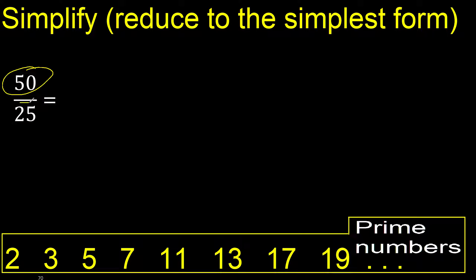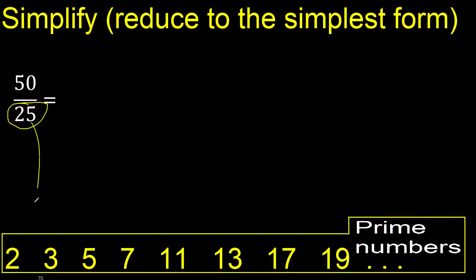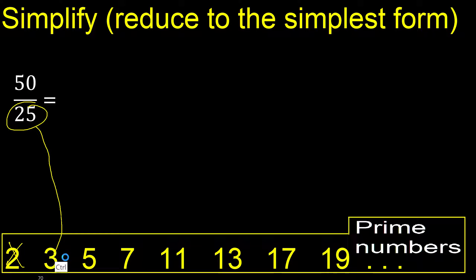50 and 25 cannot be divided by 2 because the last digit is not even. Not divided by 3 — 25 cannot be divided by 3. Divided by 5? Yes, 50 and 25 can be divided by 5.